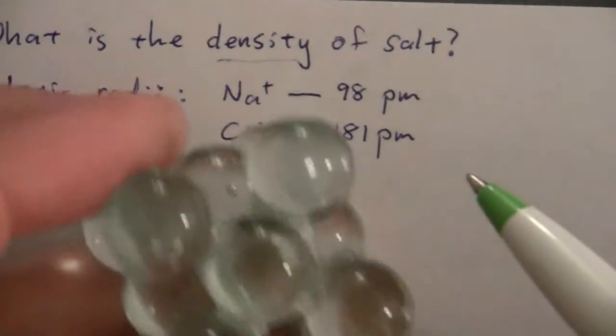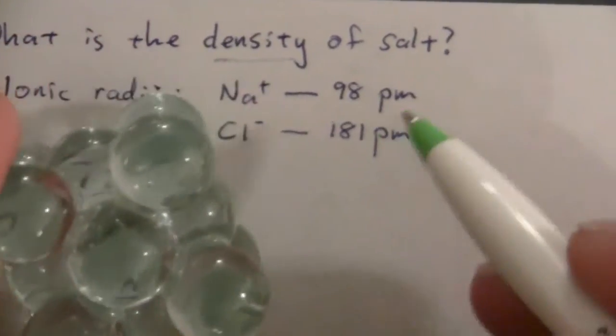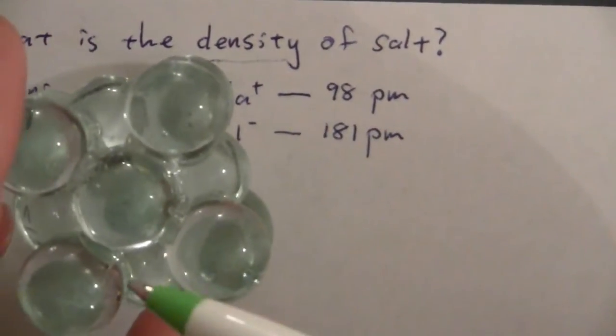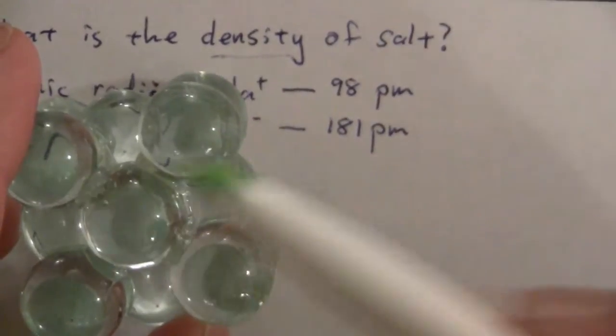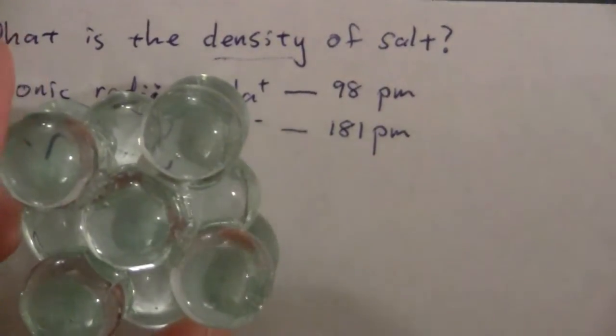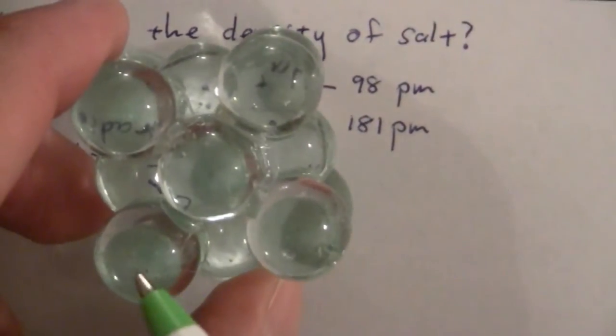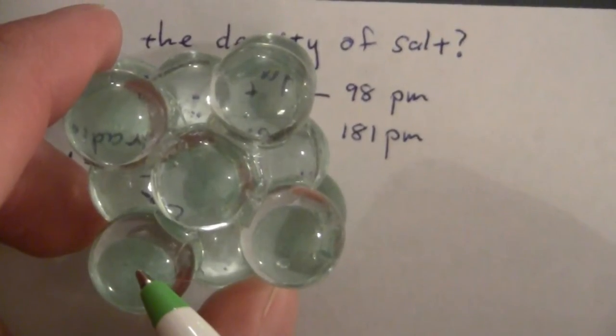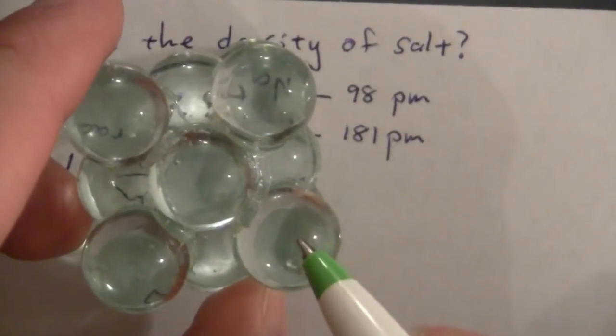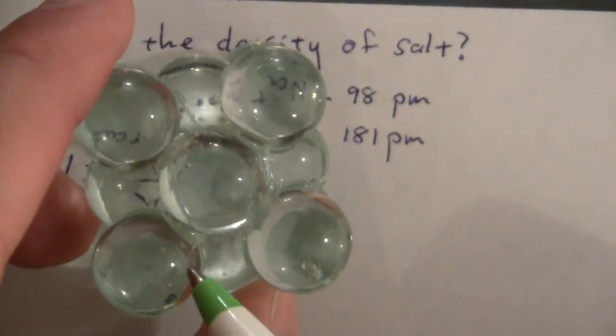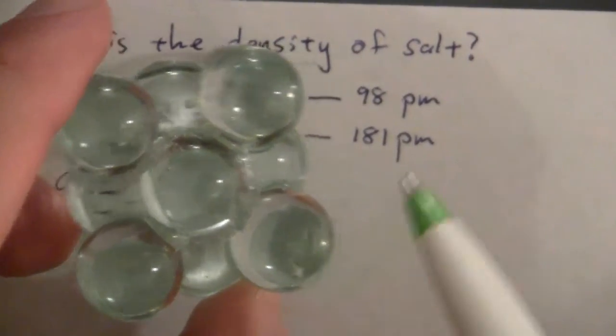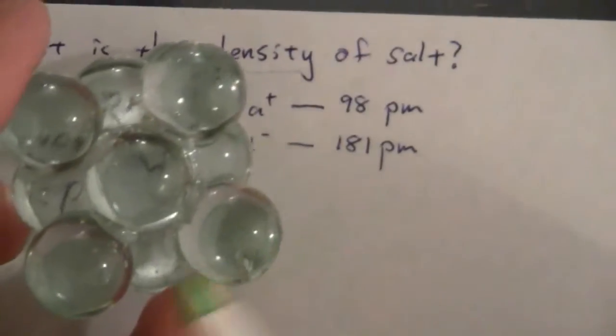So first of all, why don't we use the radii to find the volume of the unit cell. If you look at this, we have from the center point here to the center point there, two chloride atoms, so that's two radii for chloride